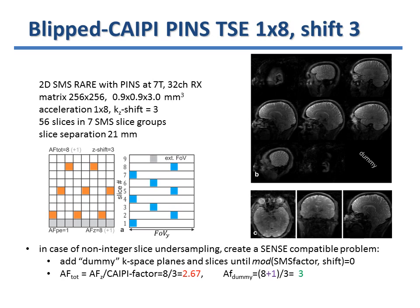This is an example for multiband factor 8 and CAIPI shift of 3, with no additional in-plane acceleration. These parameter choices highlight a more technical aspect of the SENSE implementation: the k-space-based sampling pattern must allow for a periodic extension along all dimensions in order to result in distinct peaks in the image domain. For 8 slices and CAIPI factor 3, this is not the case. Adding a dummy slice creates a SENSE-compatible reconstruction problem, and the extra slice is removed in a post-processing step.